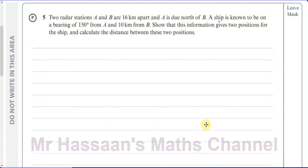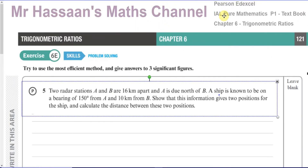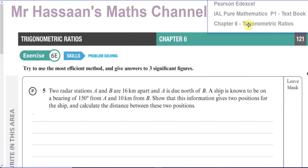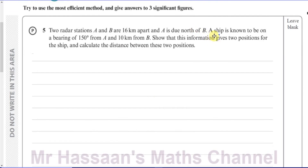Welcome back. This is Mr. Hassan's Math Channel, and this is question number five from the International A-Level Pure Mathematics 1 textbook from Pearson's LXL, Chapter 6, Exercise 6E on page 121. This question is about bearings. It says two radar stations A and B are 16 kilometers apart and A is due north of B. A ship is known to be on a bearing of 150 degrees from A and 10 kilometers from B. Show that this information gives two positions for the ship and calculate the distance between these two positions.